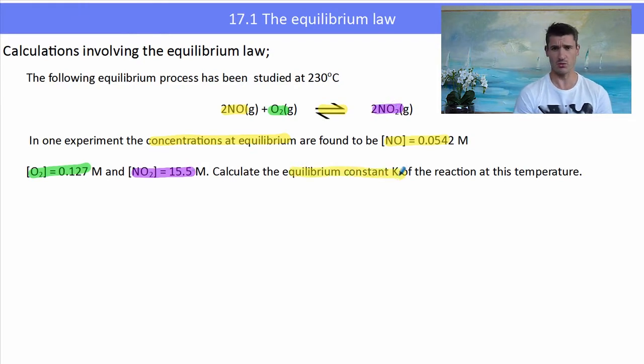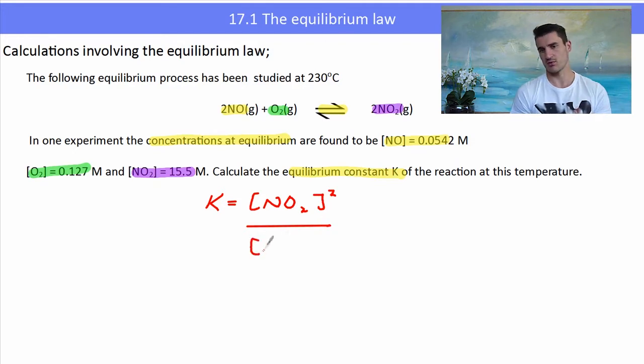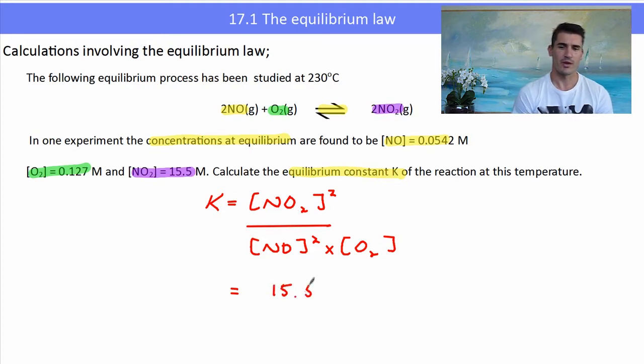A very simple one. We need to write our equilibrium expression: K equals the concentration of the products to the power of their coefficients over the concentration of the reactants to the powers of their coefficients. This was in Topic 7, Volume 2. Subbing in my values, making sure to put the right values in the right spot and squaring them appropriately, I can solve for the K value.